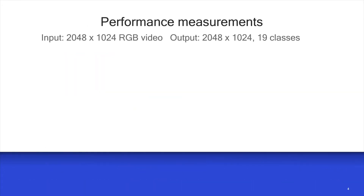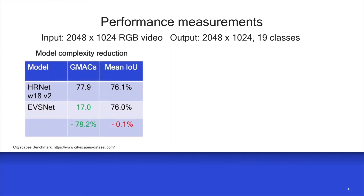Let's take a look at the results. The input is a 2048 by 1024 RGB video, and the output is one of 19 class IDs for each input pixel. The first table shows the model complexity reduction in terms of giga multiply-and-accumulates, or GMAX. The GMAX are reduced from approximately 78 down to 17, while the mean intersection over union, or mean IOU — a key indicator of accuracy — only suffers one tenth of a percent drop.